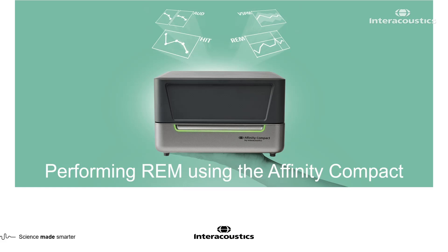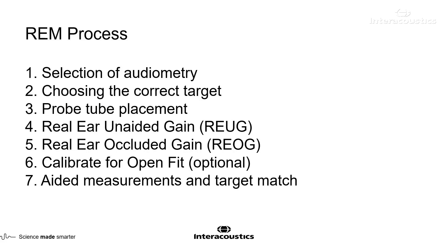This video explains the process required when fitting hearing aids on a patient's ear using an Affinity Compact. The on-ear fitting process involves several steps in this order: first, selection of audiometry; second, choosing the correct target; third, probe tube placement; then the real ear unaided gain; then real ear occluded gain; an optional step of calibrate for open fit; and finally, your aided measurements and target match. All of these steps will be explained further in this video.